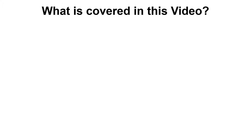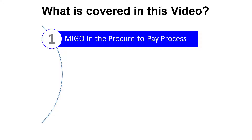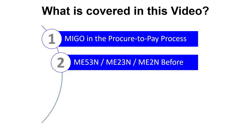Here's our list of topics. We'll start by confirming where transaction code MIGO fits in the procure-to-pay process. Before posting the goods receipt, we'll review the status of the purchase requisition using transaction ME53N, Display Purchase Requisition, and the status of the purchase order using transaction ME23N, Display Purchase Order, and transaction ME2N, Purchase Orders by PO Number.